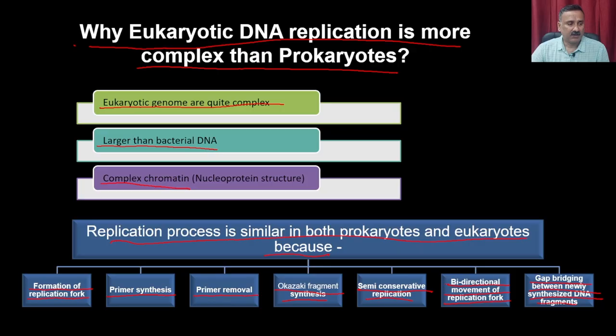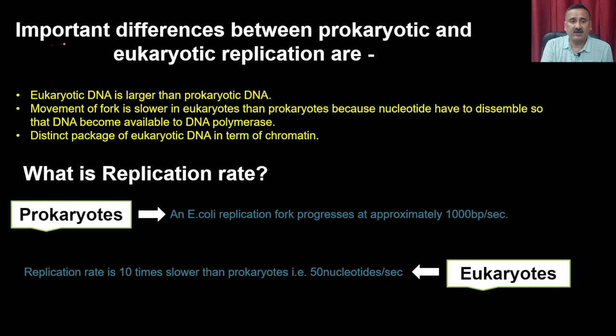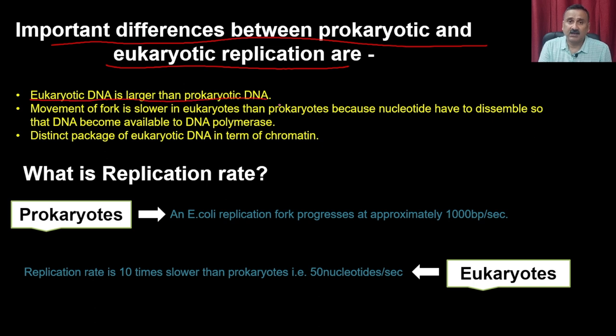Apart from these similarities, there are significant differences between prokaryotic and eukaryotic replications. One important difference is that eukaryotic DNA is larger than prokaryotic DNA, which requires different machinery. The movement of the fork is slower in eukaryotes than prokaryotes because the nucleosomes have to disassemble so that DNA becomes available to DNA polymerase.